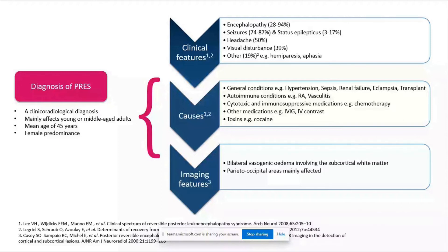Even though PRES tends to affect the posterior part of the brain, visual disturbance is only seen in about 39% of patients and it can be very variable, including things like diplopia, visual field deficits, visual hallucinations, and color vision abnormalities. Patients can also have other deficits such as hemiparesis and aphasia.